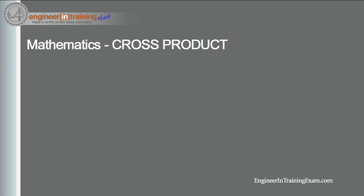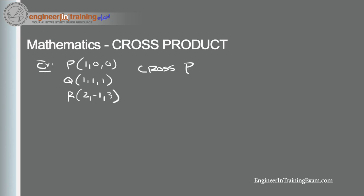Let's finish off with a quick example. Say we are given three points in a single plane: point P at (1, 0, 0), point Q at (1, 1, 1), and point R at (2, -1, 3). We're asked to find the cross product of the vectors defined by these three points. Since the cross product of two vectors is a new vector orthogonal to the originals, we need to define the two vectors in this plane. We'll use P as the origin and determine vectors PQ and PR.